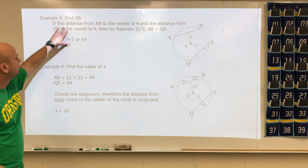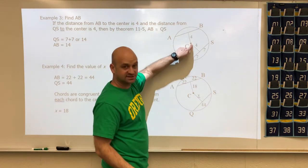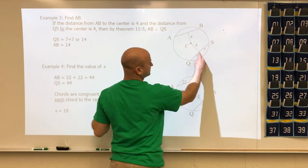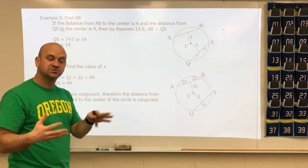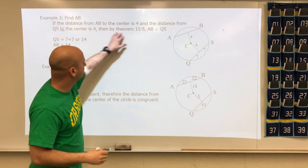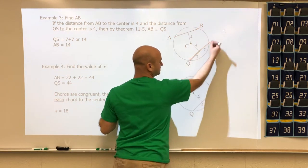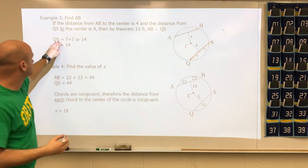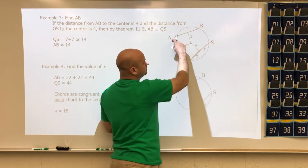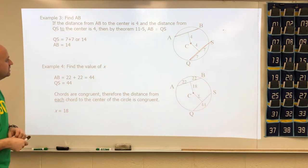Using those theorems: the distance from chord AB to the center is 4, and the distance from chord QS to the center is also 4. Since the distances are the same, by Theorem 11-5 the chords are congruent. QS equals 7 + 7 = 14, which means AB also equals 14.